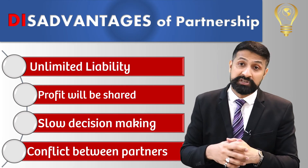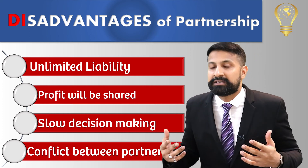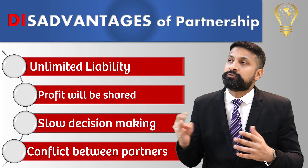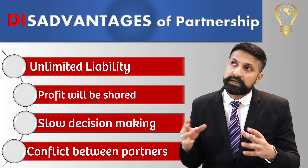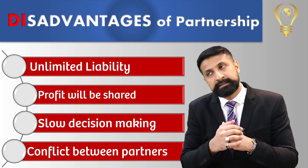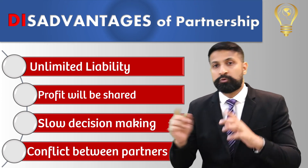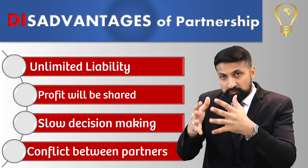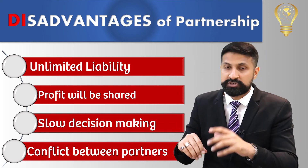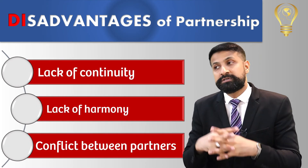Slow decision making بھی ایک بڑی problem ہے partnership میں — آپ کو سب سے consult کرنا پڑتا ہے، ایک فیصلہ سیدھا آپ نہیں لے سکتے۔ سب کے ساتھ بیٹھنا پڑتا ہے، پھر agree کرنا پڑتا ہے، اس لیے decision making بہت slow ہو جاتی ہے۔ Conflict between partners بھی ہوتا ہے — کوئی کسی angle سے سوچتا ہے، کوئی دوسرے angle سے، target market پر اختلاف ہو، marketing strategy پر اختلاف ہو — conflicts کا بہت زیادہ chance ہوتا ہے۔